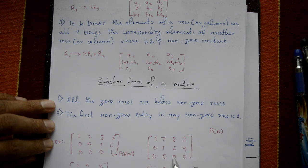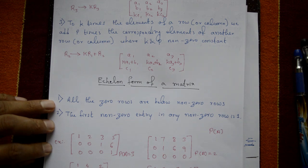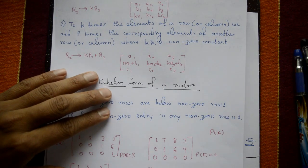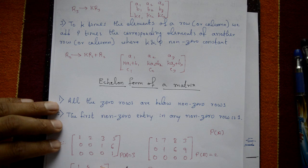For the second example, the third row is all zeros, so we count only the two non-zero rows — rank is two. For the third example, all elements in one row are zero, so rank is two: rows one four two and the row with one. For the fourth example, all rows contain elements including the last element nine, so the rank is four. Now, how to solve the echelon form — some working rules.